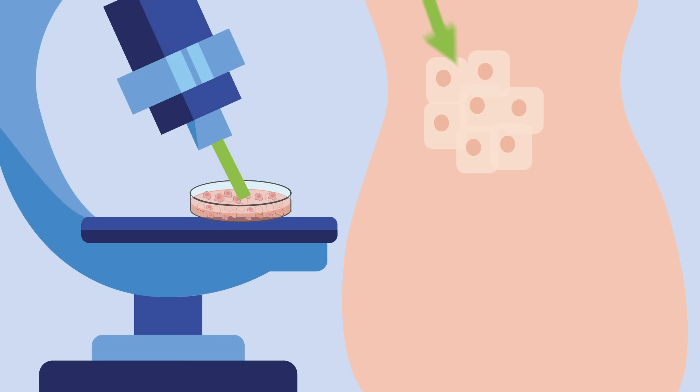Brillouin Microscopy can readily and non-invasively detect changes in tissue stiffness, aiding in the early diagnosis of conditions such as cancer and cardiovascular diseases.